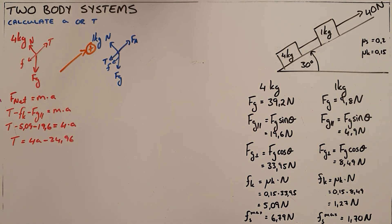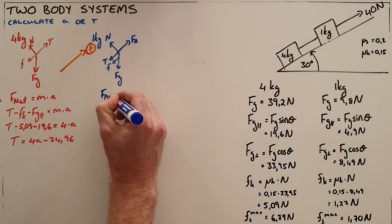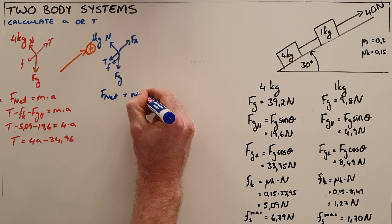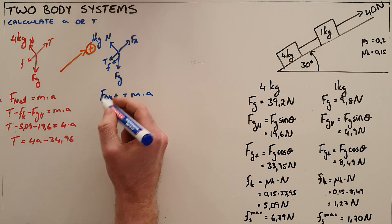I can do the same thing for my 1 kilogram object. Again F_net is equal to the mass of this object multiplied by its acceleration. In this case there is an applied force pulling it up the slope.